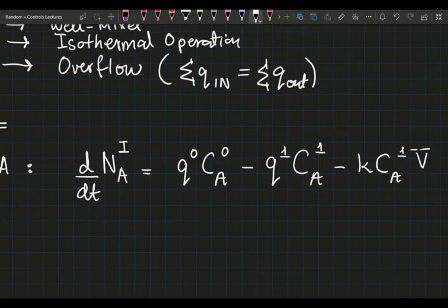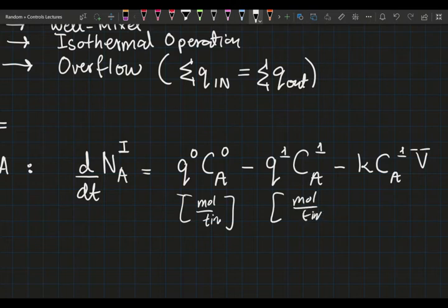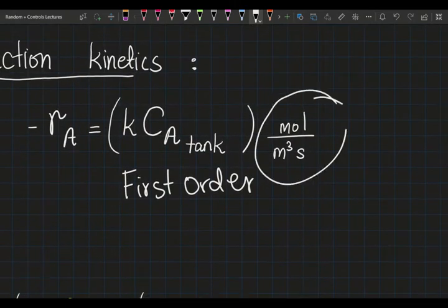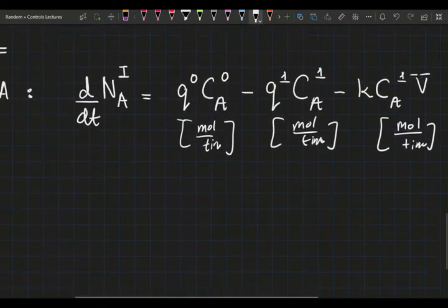Let's just check our units. This is meter cube volume per time, multiplied by mole per volume. So the units all should be mole per time. And this one also checks out to be mole per time. As I've mentioned the units for my kinetics here.